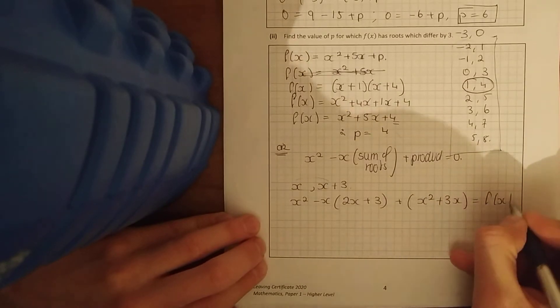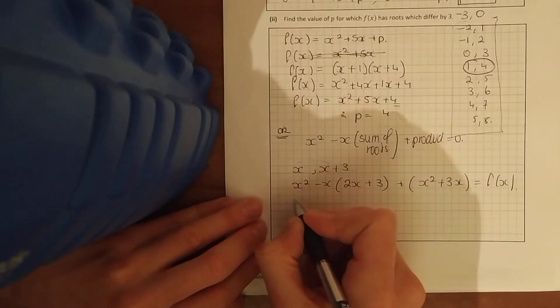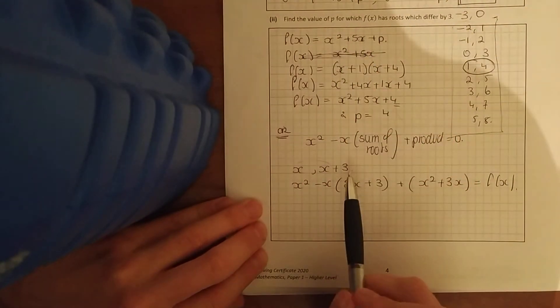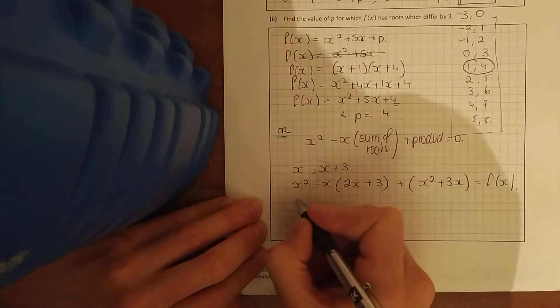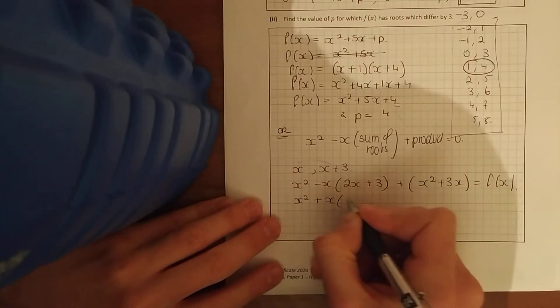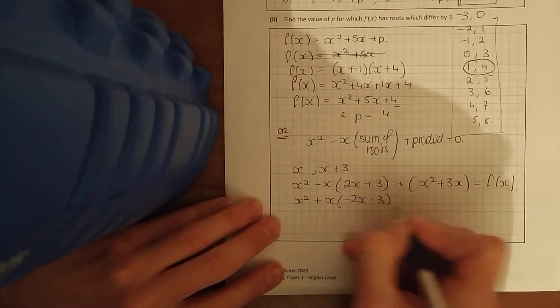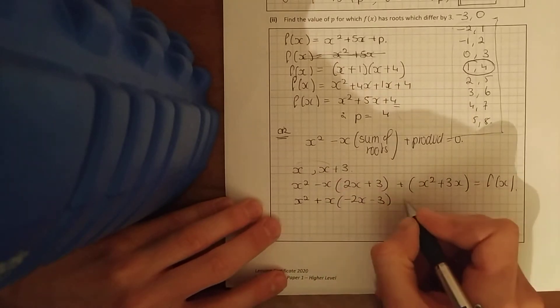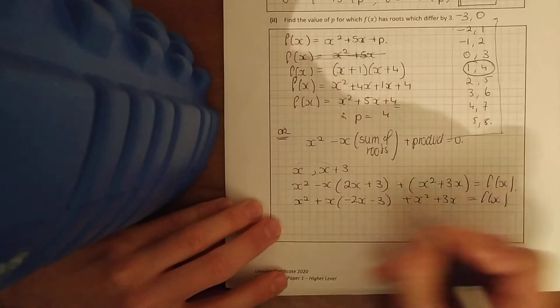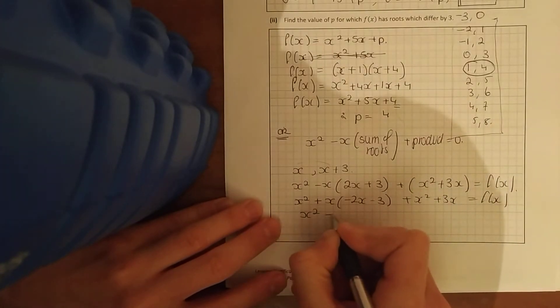f of x equals, tidy that up and I want to match it up to this. So I want a plus sign there ideally. x squared plus x minus 2x minus 3. Let's put that minus in, plus x squared plus 3x equals f of x. Now match that up to your original expression.